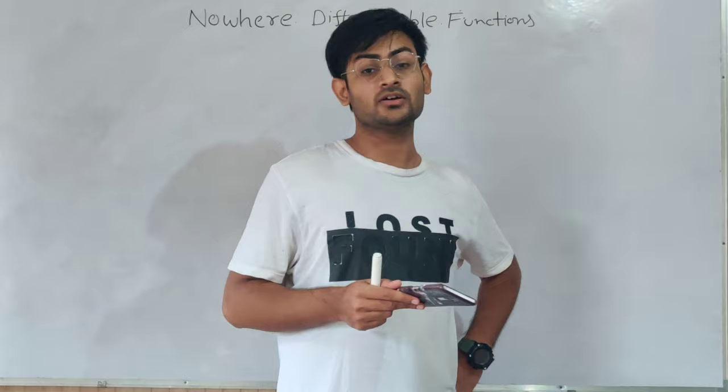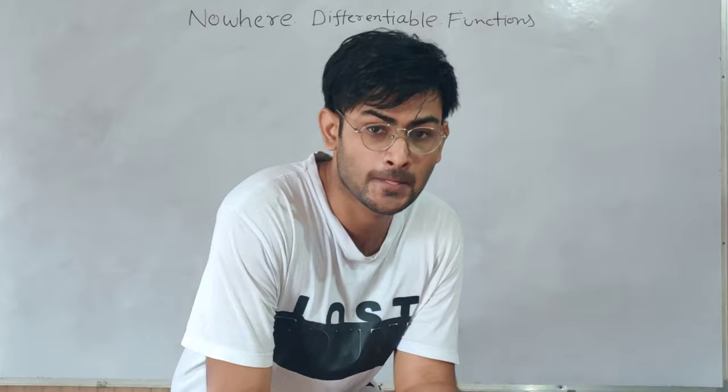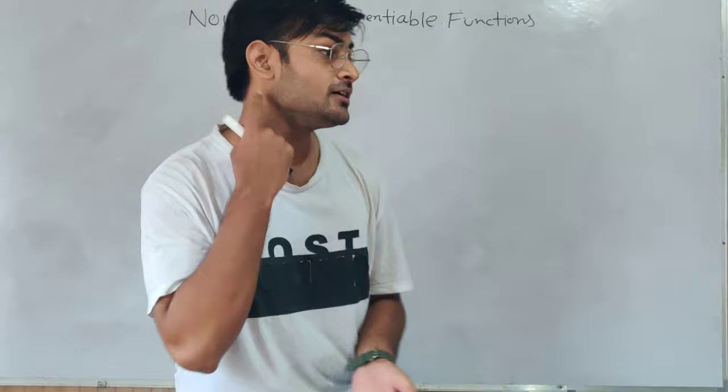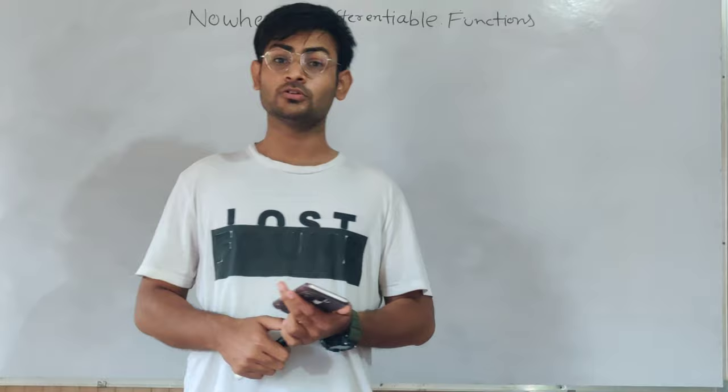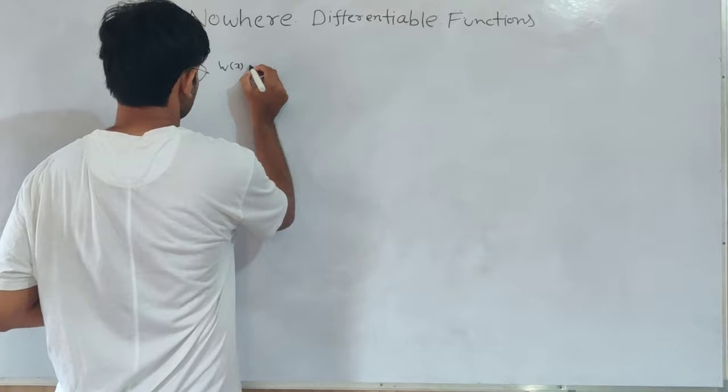So basically, in the early 1800s, it was thought that most functions are differentiable. If they are differentiable, then there are no set of points where they're not. Just in 1872, in a meeting, Sir Weierstrass showed that there is also a function that is nowhere differentiable. And how did this function happen? With the help of series.